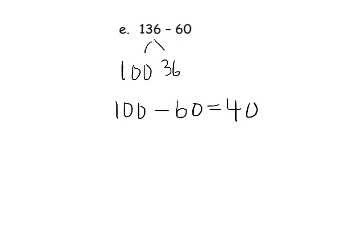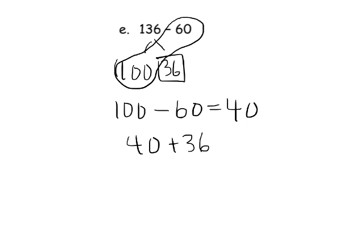So let's practice that. We're going to decompose this to 100 plus 36, and then we're going to do our subtraction. 100 minus 60 equals 40. That's 100 minus 60. And then we have 40, but then we have this extra 36, so we need to add it back in. So 40 plus 36 gives us 76, and that's our answer.